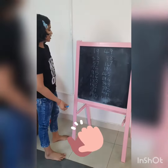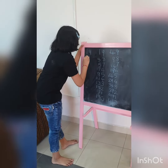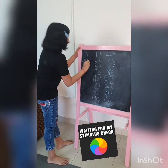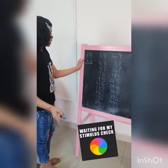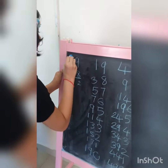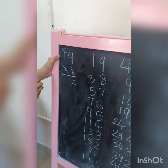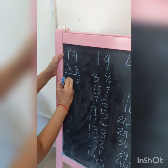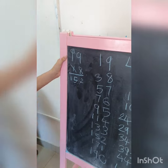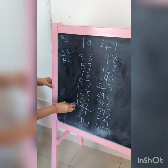Now let's recheck. So 19 into 8: 9 eights are 72, write 2 carry 7. 8 plus 7 is 15, and 8 plus 1 is... that gives 152. See, it's correct.